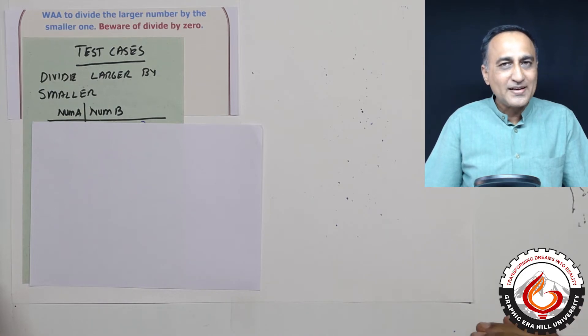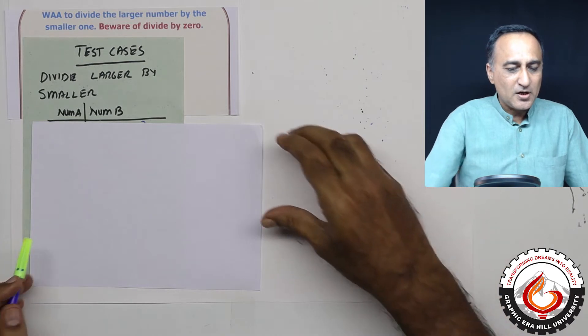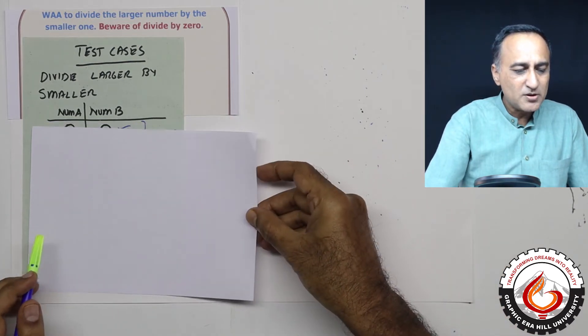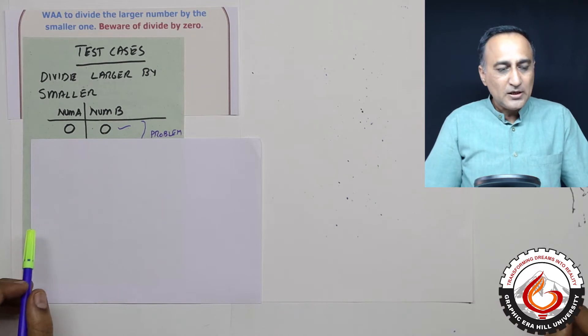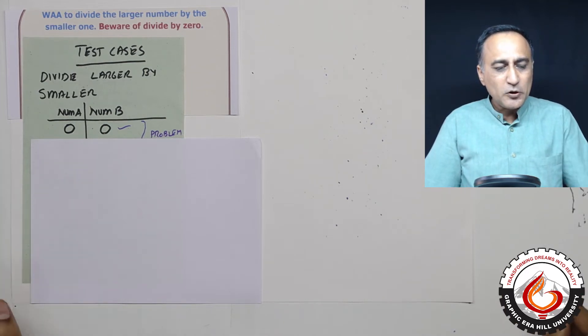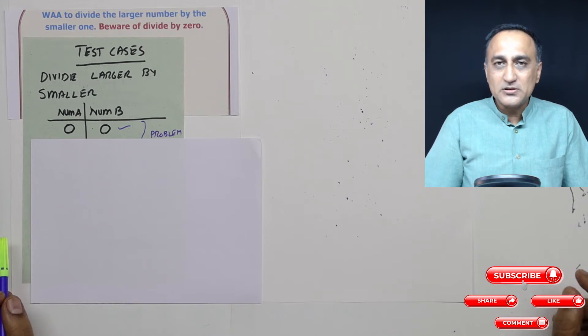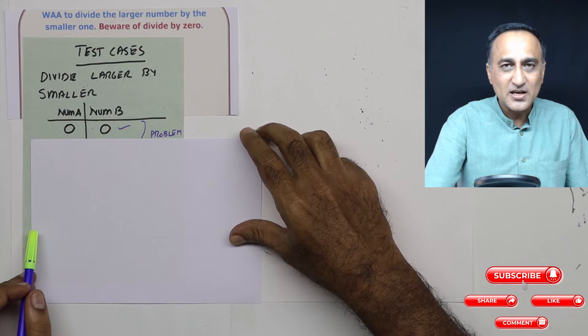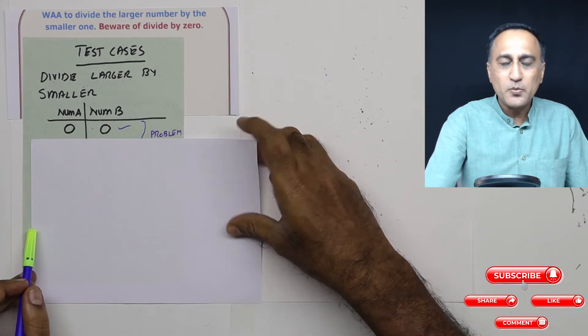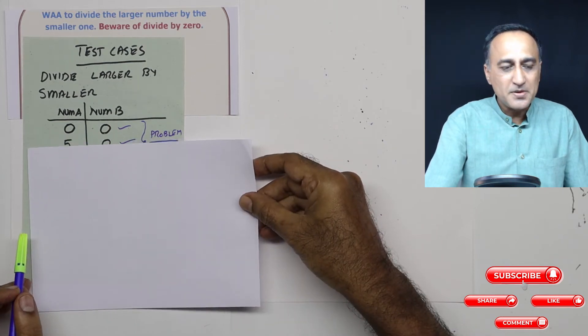Based on that, it is very easy to develop the logic. So let us say I have two variables whose names are numA and numB. Now if both of them happen to be 0, it is a problem because 0 by 0 has no answer in maths. So this is the first case, which is a problem, where both number A and number B are 0.